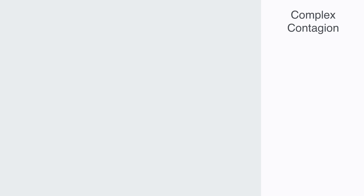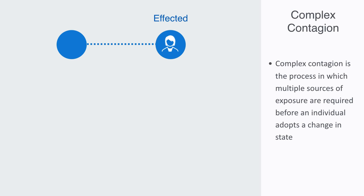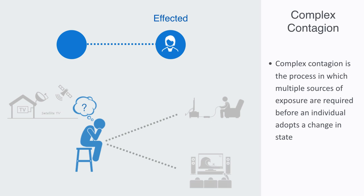Lastly, we'll touch upon the topic of complex contagion. The simple contagion model we've been describing is essentially binary — either a node is affected or not — and within this model all that matters is whether one other node affects it. Complex contagion, in contrast, is the process in which multiple sources of exposure to a phenomena are required before an individual adopts that change in state. An example might be the adoption of some new technology or innovation which is costly, especially for early adopters, but less so for those who wait. We can then model this as complex contagion, asking how many nodes need to adopt the innovation before a given node will do likewise.